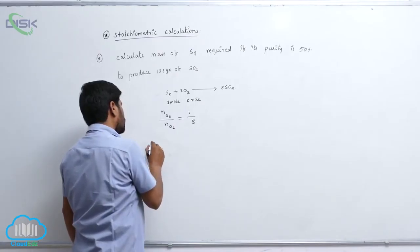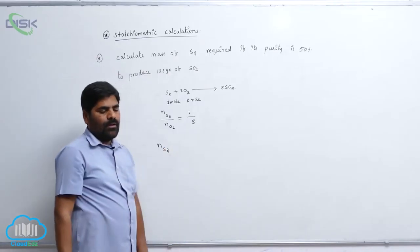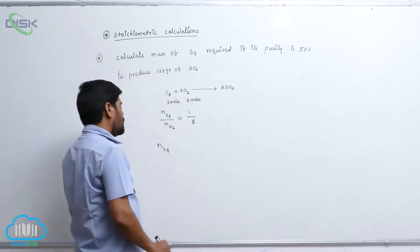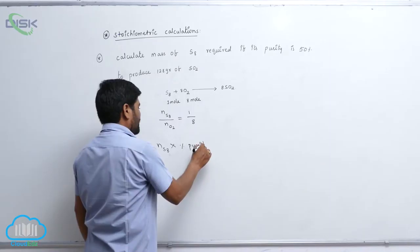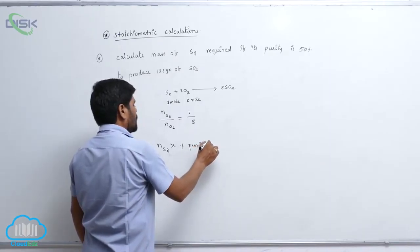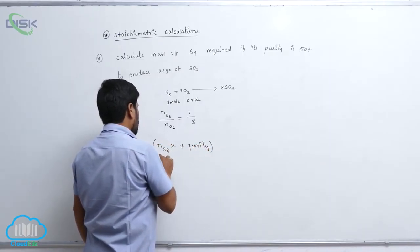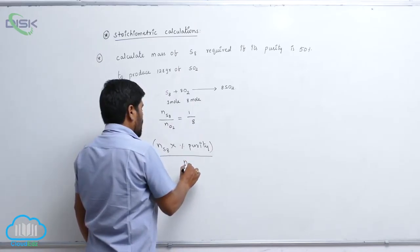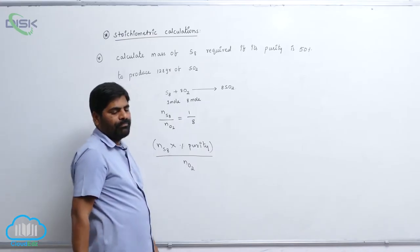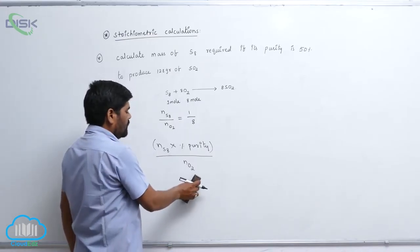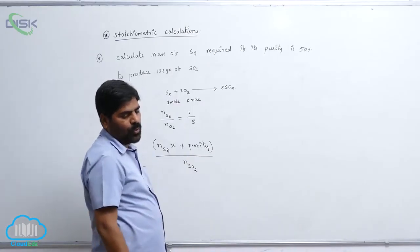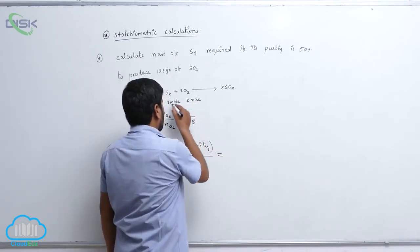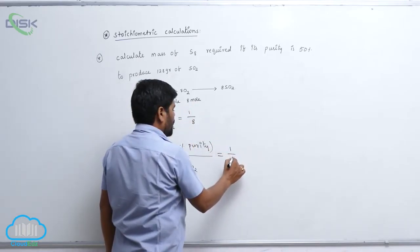Number of moles of S8 into percentage purity divided by number of moles of O2. Number of moles of S8 equals to number of moles of this one, that is 1 by 8.